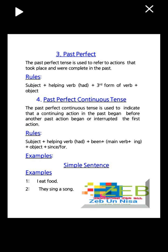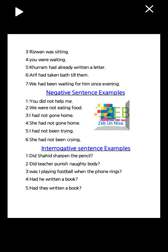Simple sentence examples for past tense: number one, I ate food. Number two, they sang a song. Number three, Dawood was sitting. Number four, you were waiting. Number five, Horam had already written a letter. Number six, Arif had taken a bath by then. Number seven, we had been waiting for him since evening.